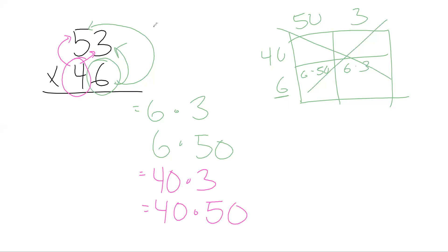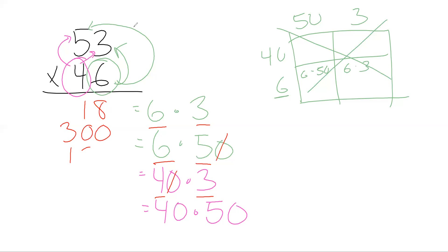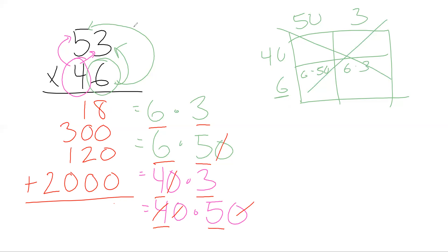Now we multiply and add: 6 times 3 is 18. Six times 50 is 300. Forty times 3 is 120. Forty times 50 is 2000. Adding those together gives us 2438. So 53 times 46 equals 2438.